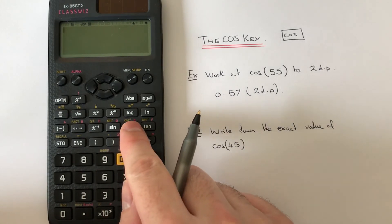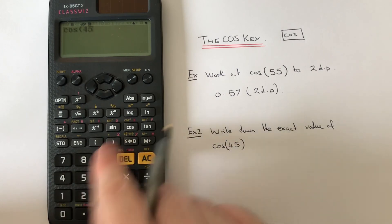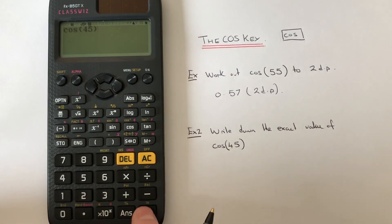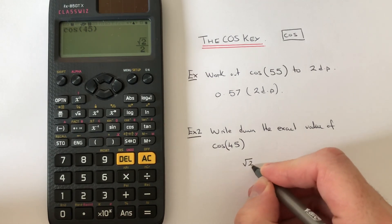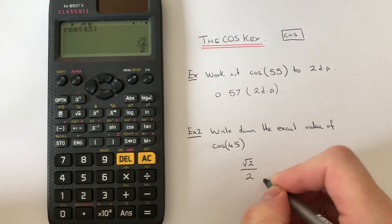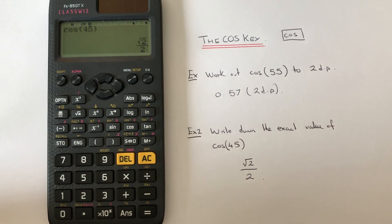Just press cos 45, close your bracket. If you press the equals, cos 45 is the same as root 2 over 2. So thanks for watching guys, see you next time.